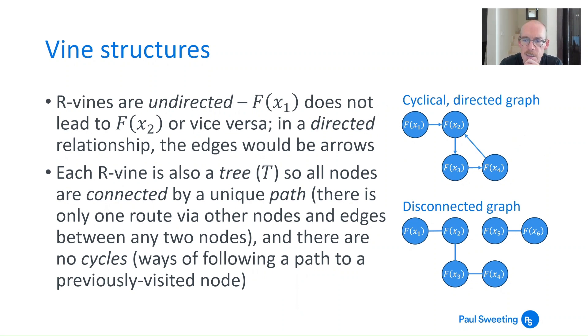Now finally there's some particular characteristics of vines that make them vines and not just any other sort of graph. For example R-vines are undirected. f(x1) doesn't lead to f(x2) or vice versa. Now if you had a directed relationship then looking at that top diagram all the edges would be arrows. And I know I said when I was talking about large and small stock markets that the large ones might drive the smaller ones. But what we also should be familiar with is the saying that correlation doesn't imply causation. Certainly when we're looking at vine structures correlations don't imply causation. So R-vines are undirected.